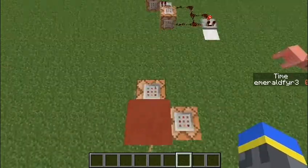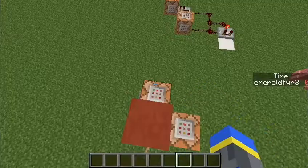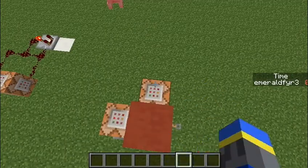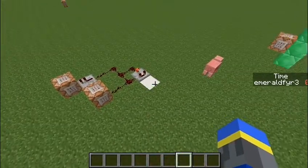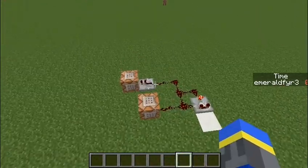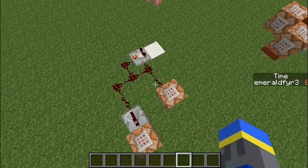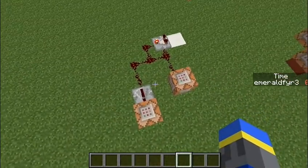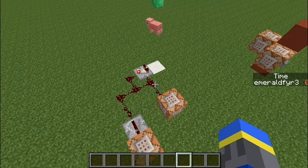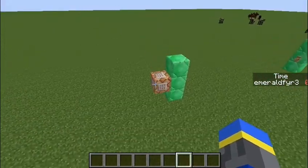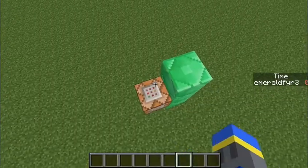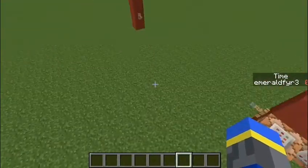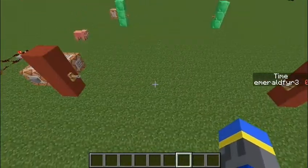What these will do is this one sets my score for time to zero. This one places a redstone block on that quartz, which starts a clock that increments one to time every one-tenth of a second. So you'll just have to imagine a decimal place right after the tens place, and this one simply gets rid of that redstone block.